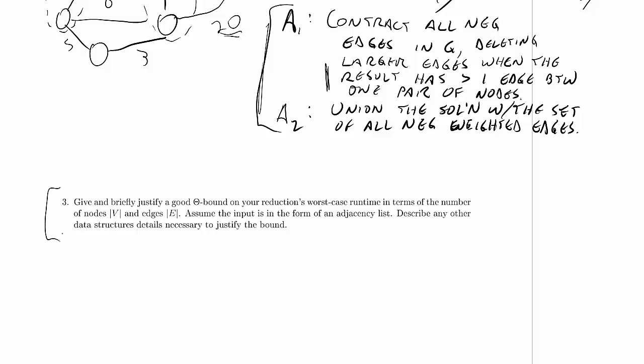We need to describe any other data structure details necessary to justify our bound. The easy part is Algorithm 2: when we get a solution to the minimum spanning subgraph problem with no negative edge weights, we get a list of edges that are part of that minimum spanning subgraph, and we just need to add back in the negative edges. Even if we have to go back to the original adjacency list and search through it for negative edges, that should take theta(V + E) time. If we build up an intermediate data structure to look up edges on contracted vertices later, that won't take additional time. So we've spent theta(V + E) so far.